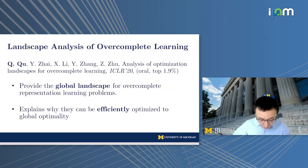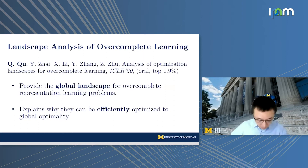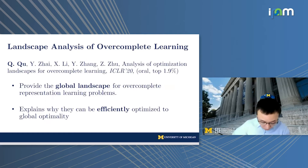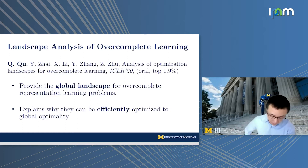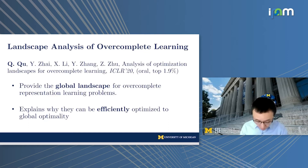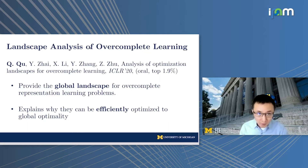The first work concerns over-complete decomposition. This is a paper we published last year where we provide the first global landscape analysis for over-complete representation learning problems, including tensor decomposition and over-complete dictionary learning, and we explain why they can be efficiently optimized to global optimality.